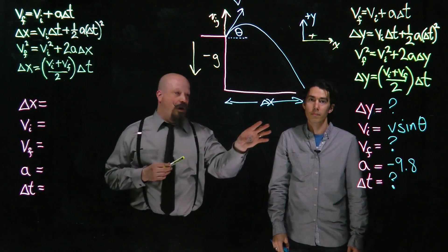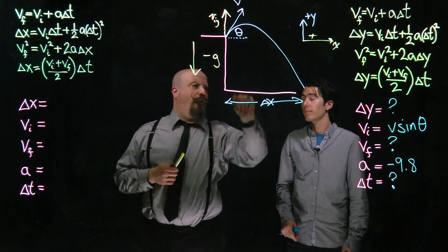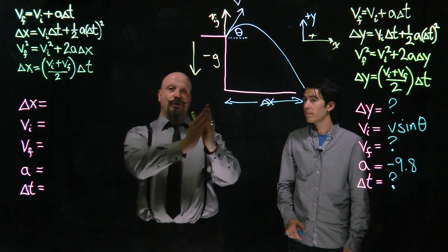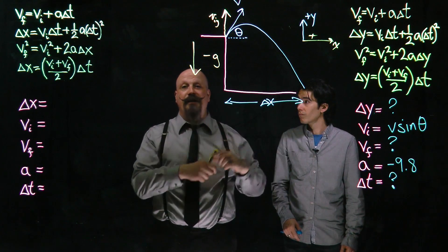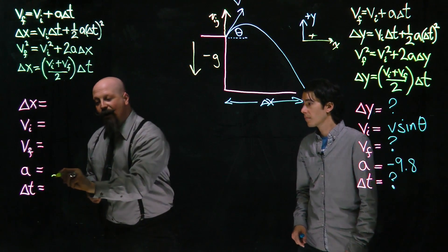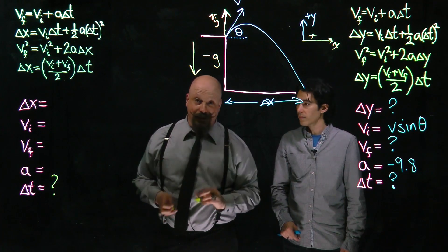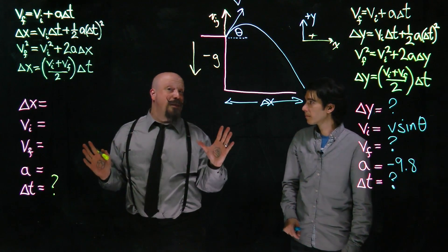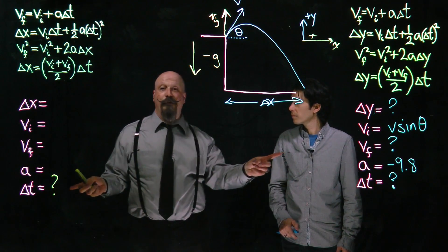The nice thing about the quantity time is that the amount of time it takes for it to go up and fall back down is the same amount of time it takes for it to actually move through the x displacement. So even though I also don't know what the time is, I do know that these two quantities are exactly the same. And those are the one thing that we can use to relate these two frames of reference.